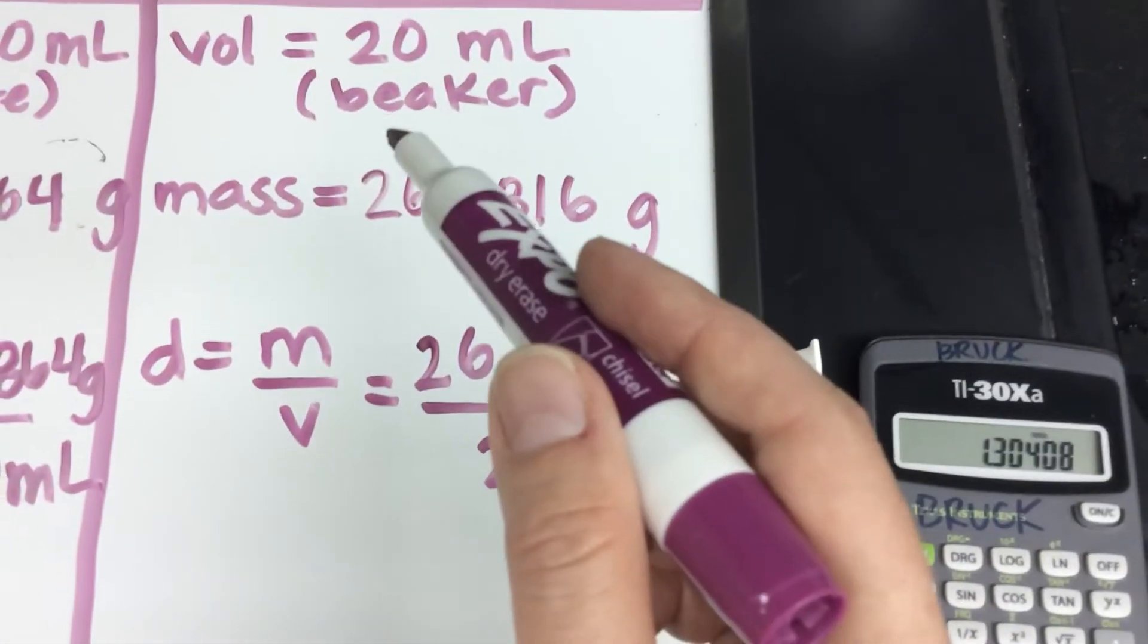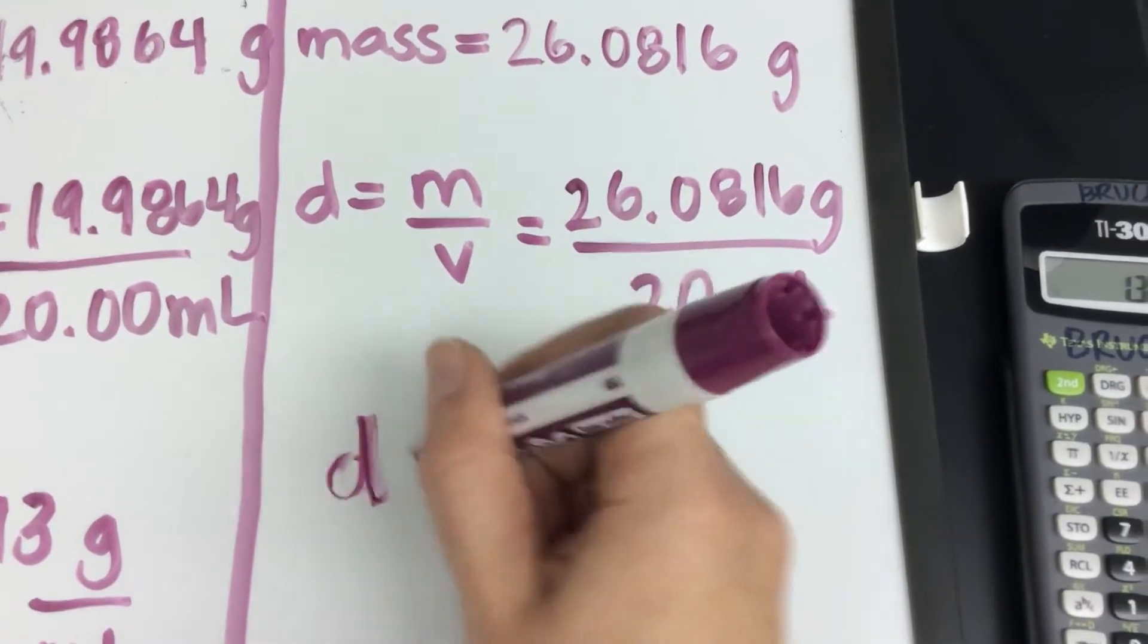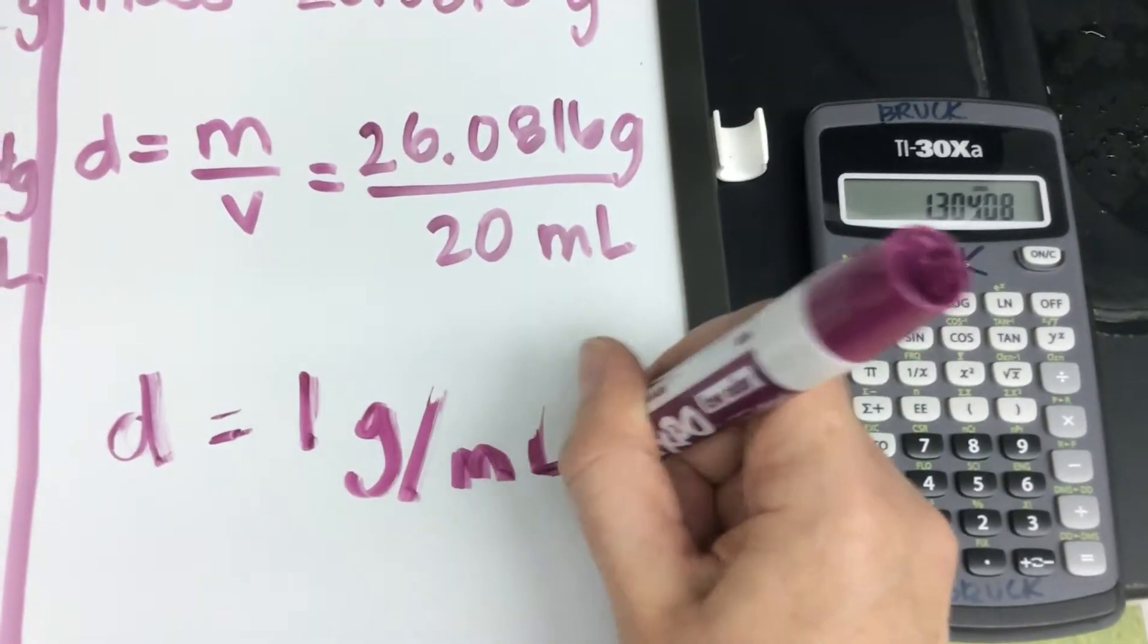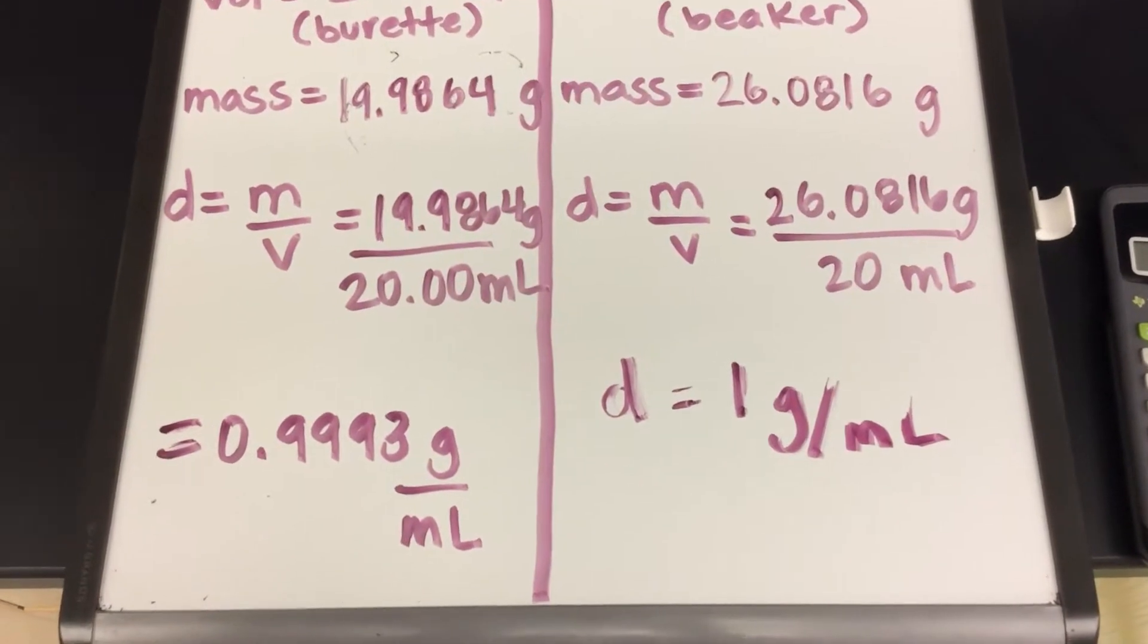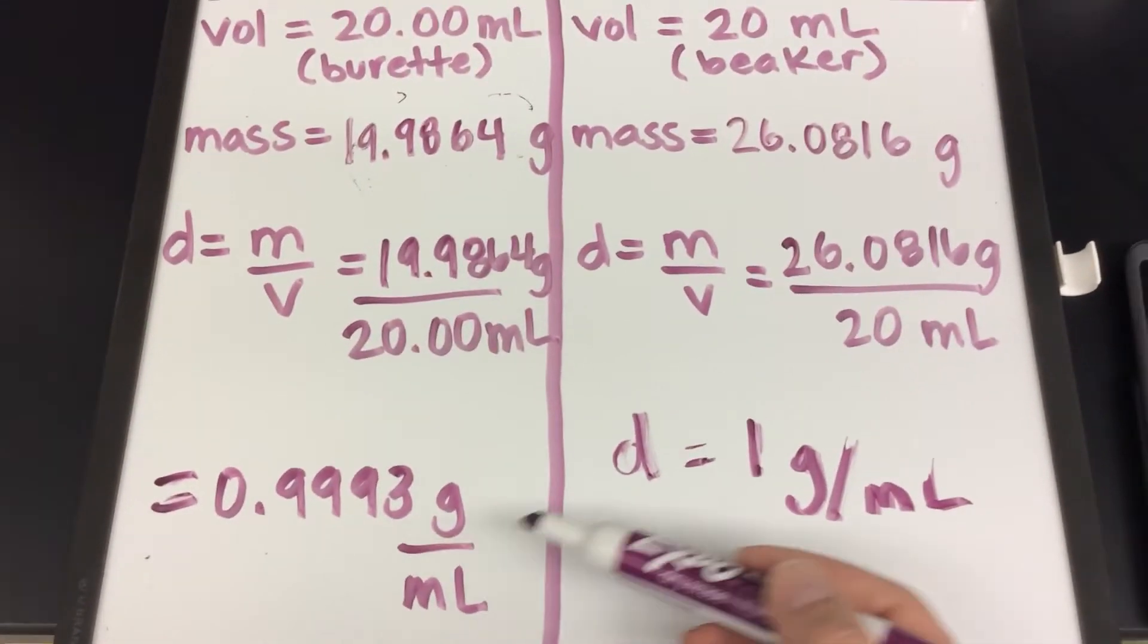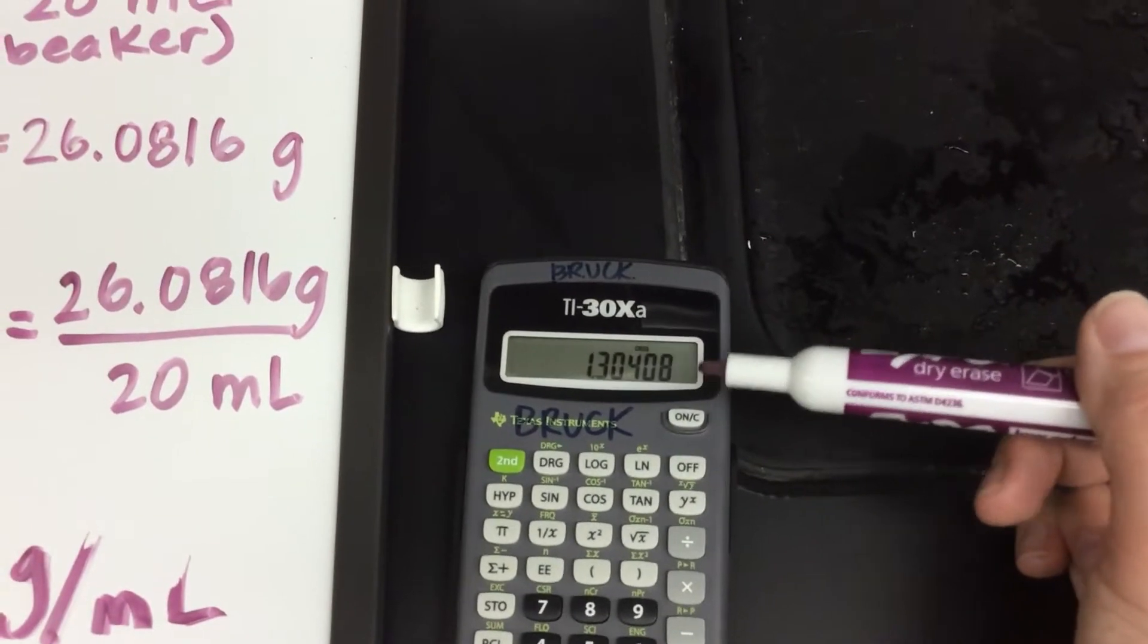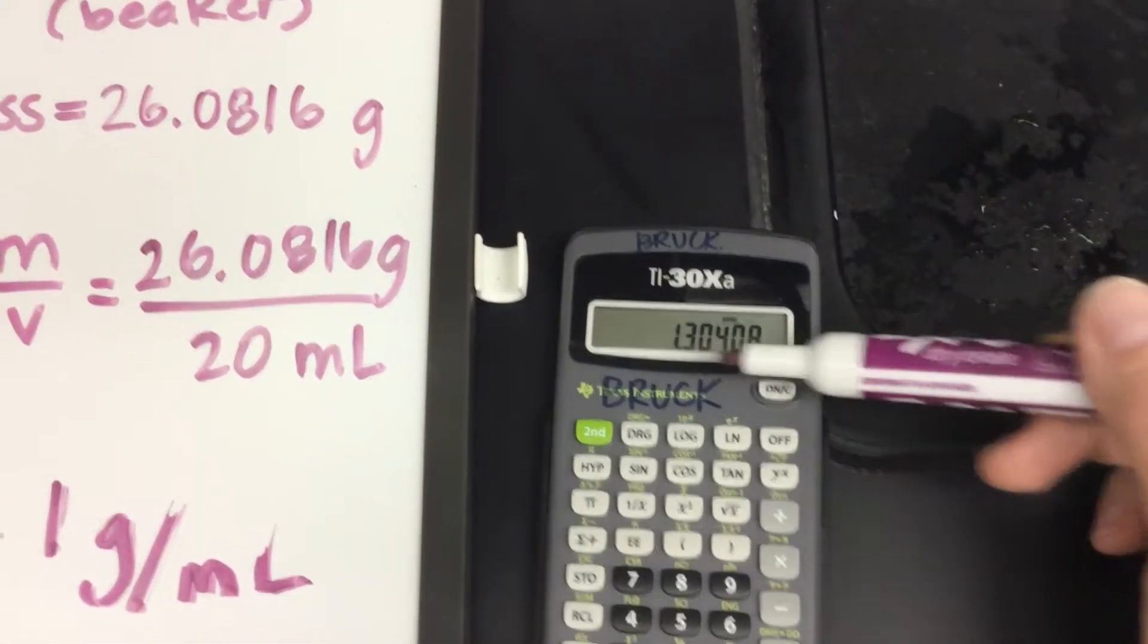Well, I've only got one sig fig here. D is equal to 1 gram per milliliter. So my final answer is a function of how many sig figs I had in my original calculation. Right? When you do this math, you get 1.30408. But all these decimal places go bye-bye in my final answer here.